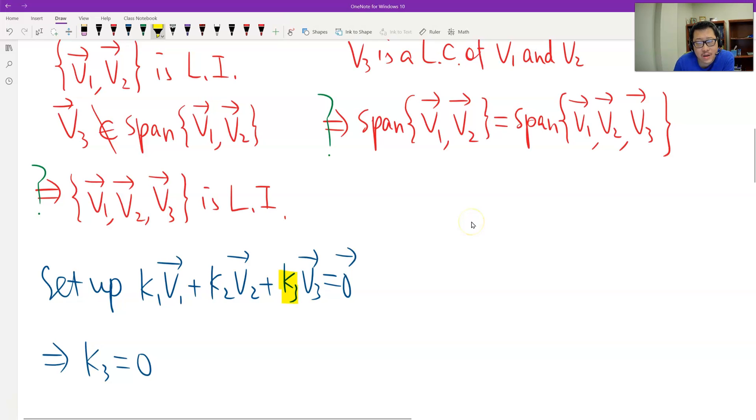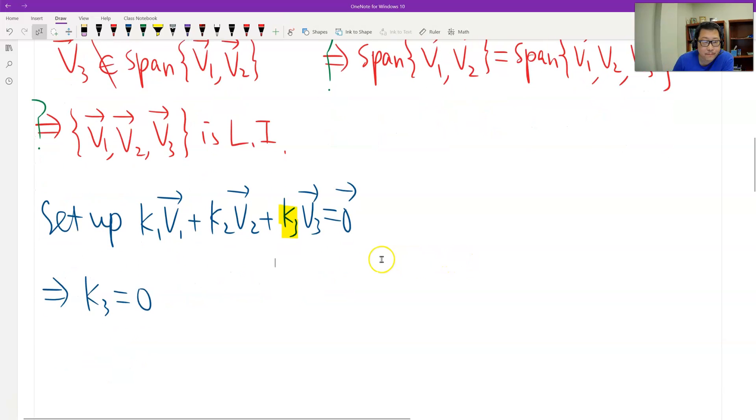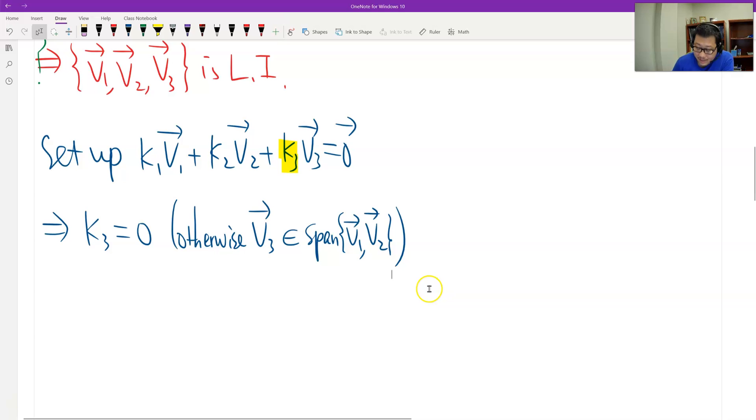First, we can find that K3 should be equal to zero. Why? K3 is zero. Why? Because if K3 is not zero, we can solve for V3. Therefore, V3 is a linear combination of V1, V2. But V3 does not belong to the span, so V3 should not be a linear combination. Therefore, K3 should be zero. It's easy, right? Otherwise, V3 belongs to the span of V1, V2. So K3 is zero.